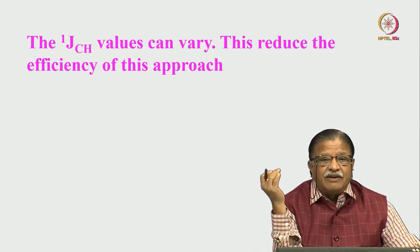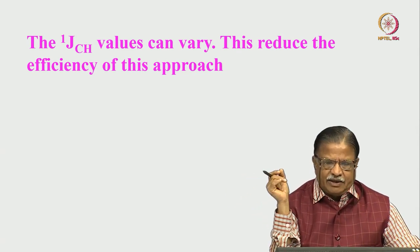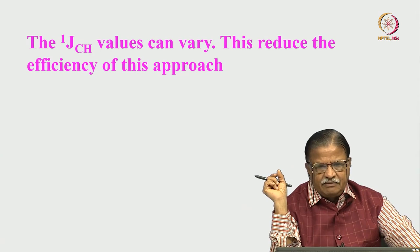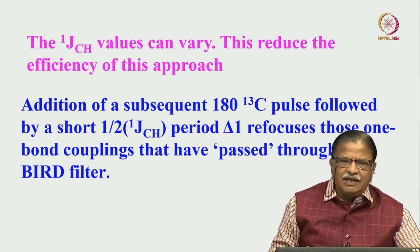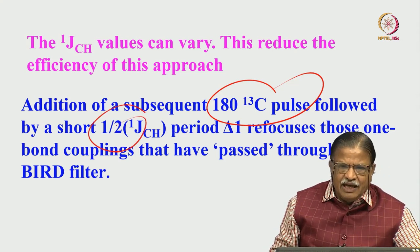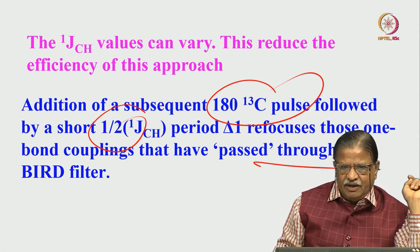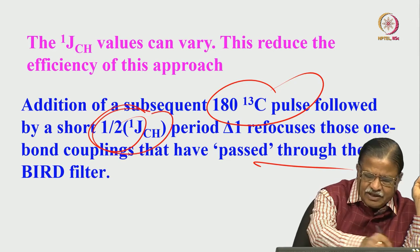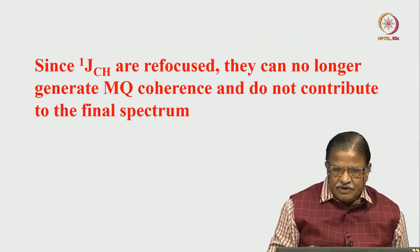Of course, 1JCH values can vary — they are not constant. 1JCH can be 150 to 250 Hz depending on the type of molecule, and this can affect the efficiency of the BIRD approach since the delay is set for one value. If the value is different, complications arise. One way to handle this is to apply an additional 180-degree carbon-13 pulse followed by a short delay of 1 over 2JCH, which refocuses those one-bond couplings that did not get filtered out by the BIRD element.